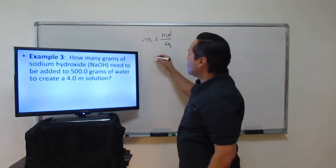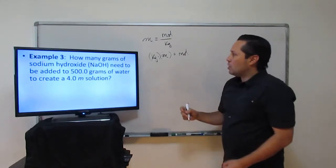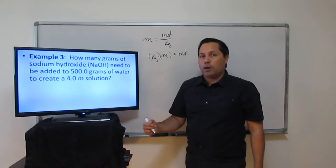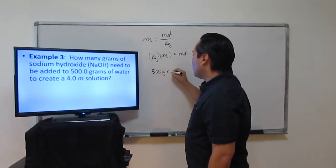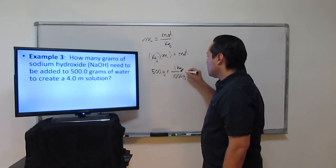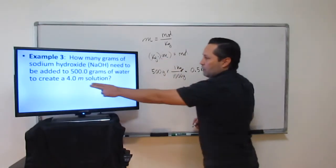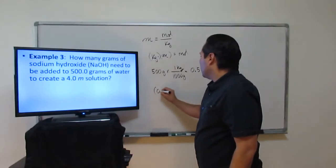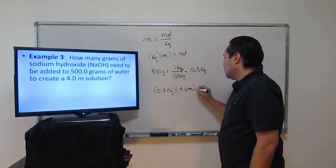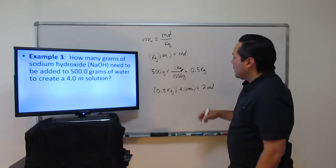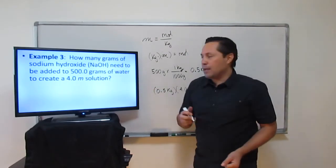We'll rearrange the molality formula: kilograms × molality = moles. First we need the kilograms — we have 500 grams of water, so: 500 grams × (1 kilogram / 1,000 grams) = 0.5 kilograms. The molality is given as 4 (formal solution). So the moles = 0.5 kilograms × 0.4 molal = 2 moles. Now that we have the moles, we can convert back to grams, but first we need the molar mass of NaOH.